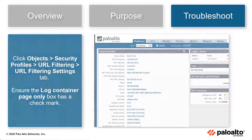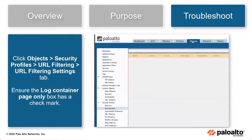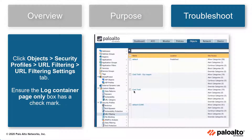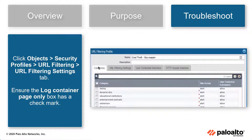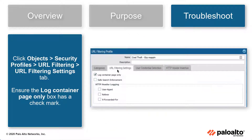Under Objects, Security Profiles, URL Filtering, click the URL filtering settings tab. Ensure the Log container page only box has a checkmark. This will ensure the best practice check passes and correctly reads the link to the web page.